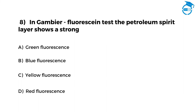In the Gamboge fluorescence test, the petroleum spirit layer shows a strong: Option A: green fluorescence. Option B: blue fluorescence. Option C: yellow fluorescence. Option D: red fluorescence.